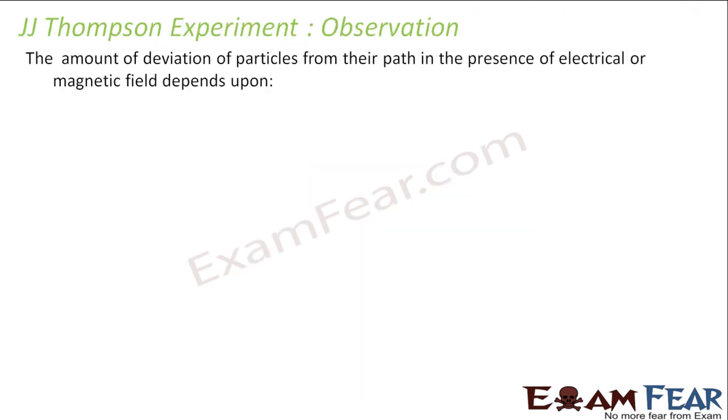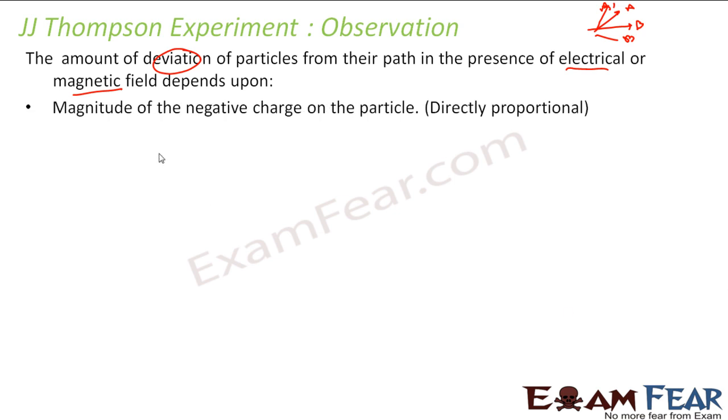So the observation was the amount of deviation of particles from their path in the presence of electrical or magnetic field. For example, instead of B, it can go to A and C, right? This amount of deviation of the particle in magnetic field or electric field depends on the magnitude of the negative charge. It is directly proportional. More the charge, more is the deviation.